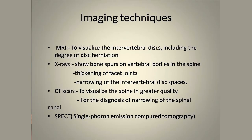Imaging techniques play a major role in exact diagnosis. MRI is especially useful to visualize the intervertebral disc and the degree of disc herniation, which cannot be clearly seen on X-rays. X-rays help to identify spurs, vertebral body changes, thickening of facet joints, and narrowing of intervertebral disc spaces. CT scan provides visualization of the spine in greater detail. SPECT — single photon emission computed tomography — also helps with differential diagnosis.